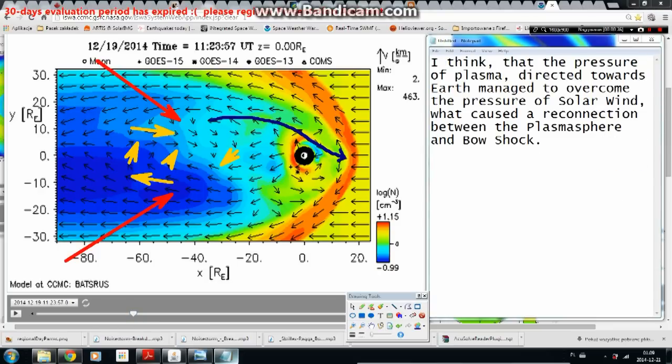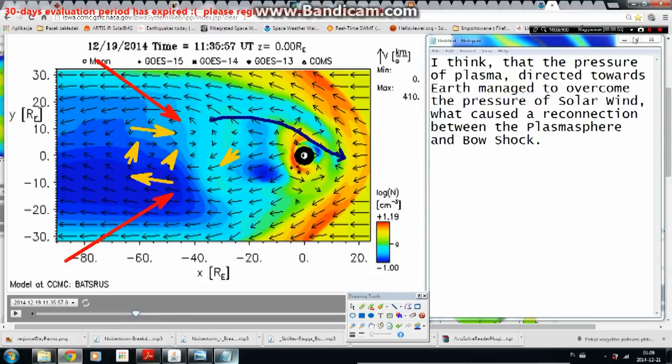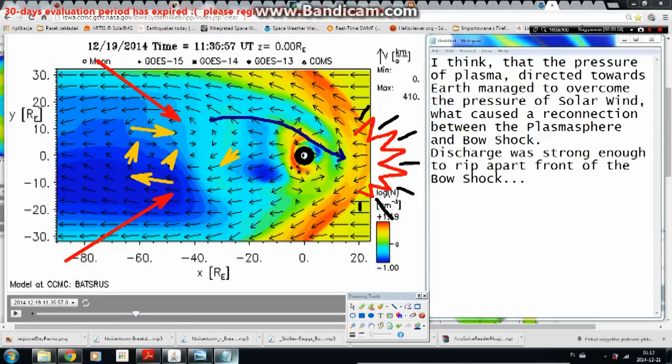I think that the pressure of plasma directed towards Earth managed to overcome the pressure of solar wind, what caused a reconnection between the plasma sphere and bow shock. This charge was strong enough to rip apart front of the bow shock.